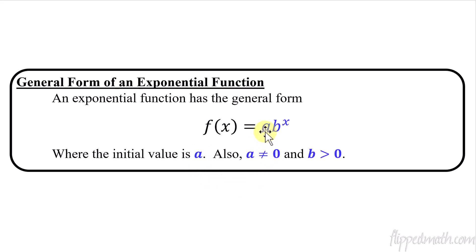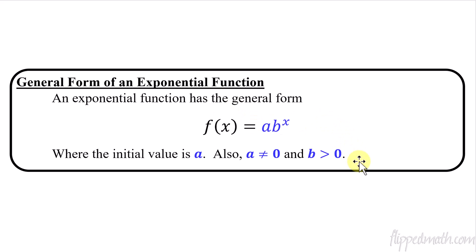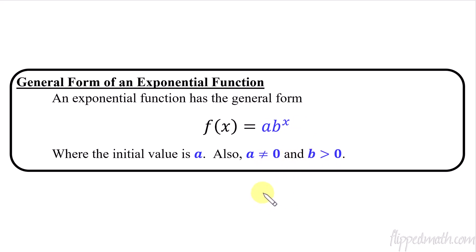We have to know that a cannot equal zero — if a was zero, then f(x) would just equal zero, and the b^x term would cancel out. We also have to have b greater than zero, because if b was less than zero we'd have a negative number going back and forth from positive to negative. That's not an exponential function, so we have to have these restrictions in order for it to be one.